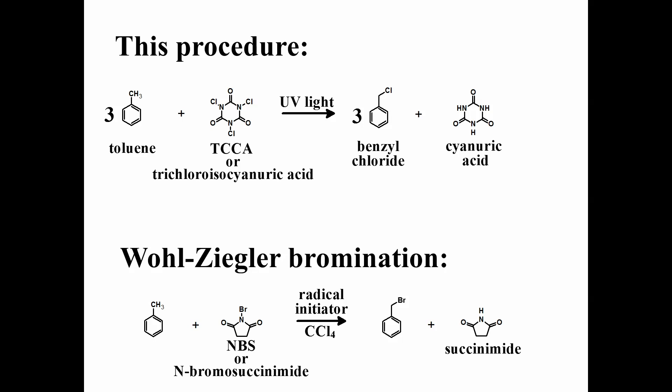In a home setting, chlorine gas needed for the free radical chlorination is often produced from TCCA and hydrochloric acid. But it should be no surprise that TCCA can be used directly in the generation of chlorine radicals, as it is similar in structure to NBS that is commonly used in radical brominations. Such brominations are also known as Wohl-Ziegler brominations.